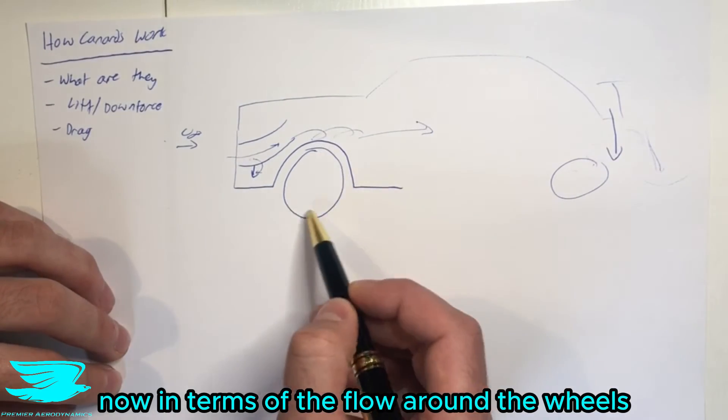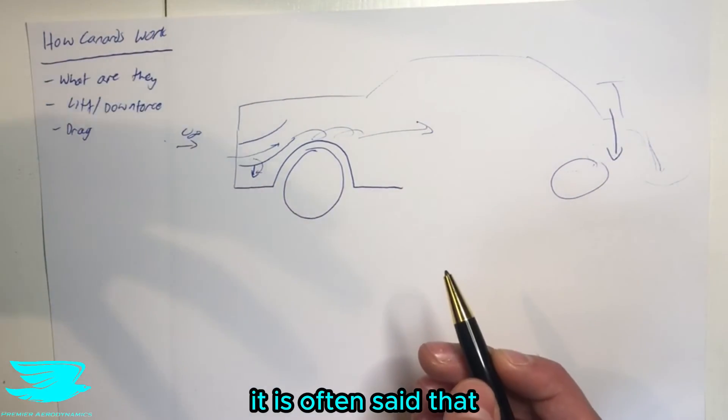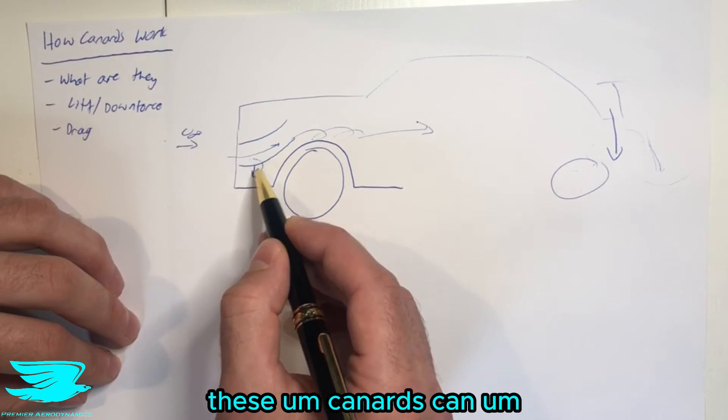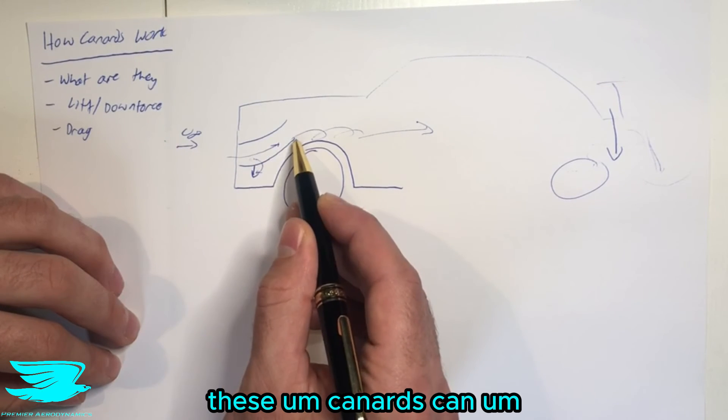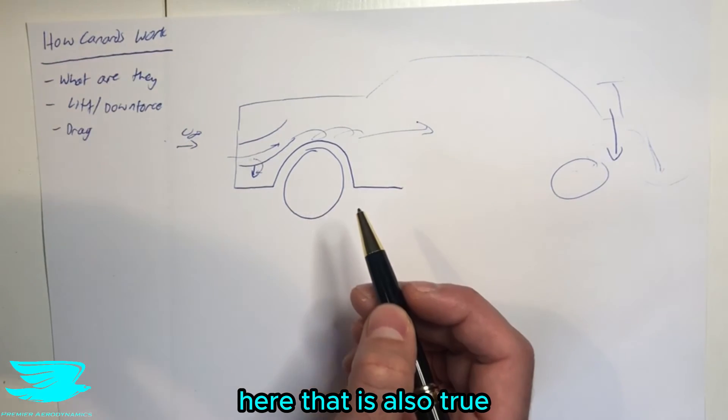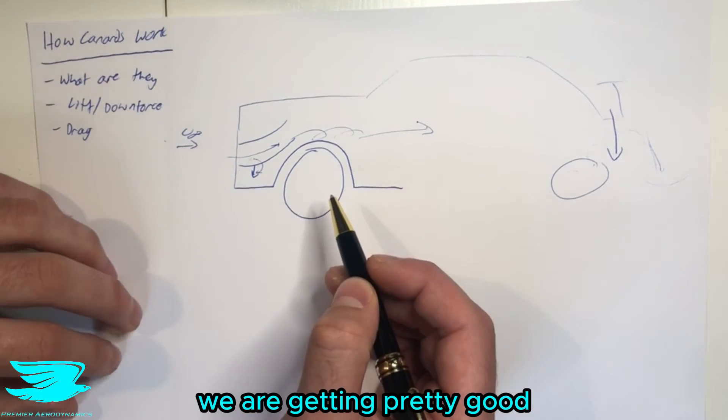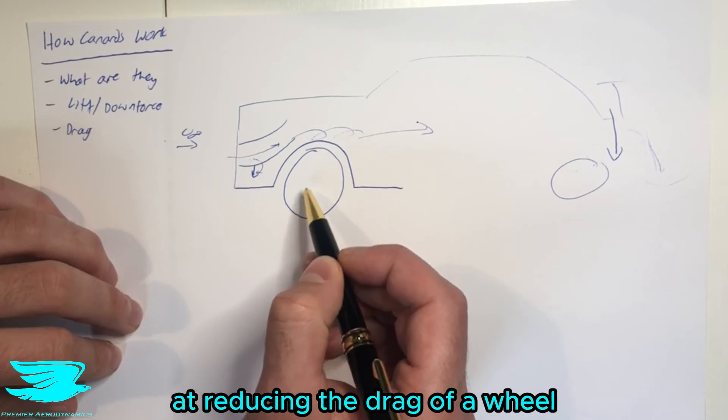Now, in terms of the flow around the wheels, it is often said that these canards can redirect the flow around the wheels to reduce the drag here. That is also true, but again, in modern times, we are getting pretty good at reducing the drag of a wheel.